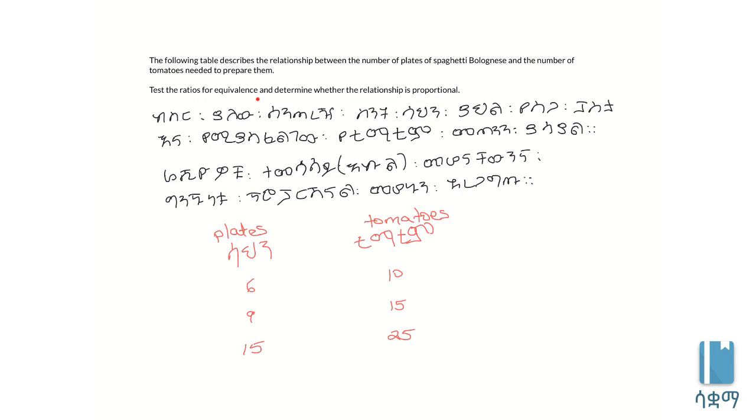Test the ratios for equivalents and determine whether the relationship is proportional. Looking at this table, we have several plates - six plates, nine plates, fifteen plates - and the corresponding number of tomatoes needed.